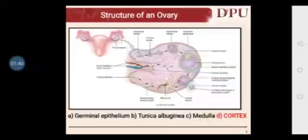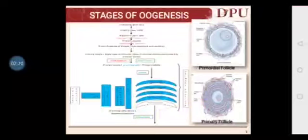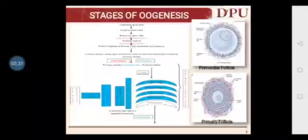Let us see the different stages of oogenesis. Initially, even before the girl is born — in the fetal stage — primordial germ cells from the yolk sac migrate to the ovary. Once there, they divide mitotically and produce millions of germ cells, which become primary oocytes. About 2 lakh to 20 lakh primary oocytes are produced, of which only 40,000 remain until puberty, and of those only 400 reach maturity and ovulate during the female reproductive lifetime, from puberty to menopause.